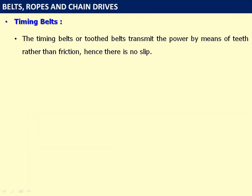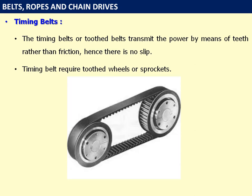Timing belts, or toothed belts, transmit power by means of teeth rather than friction. Hence, there is no slip. Timing belts require toothed wheels or sprockets. This figure shows the sprockets or toothed wheels and the timing belt or toothed belt. There is a similar action to gears and power is transmitted due to direct contact between the teeth.